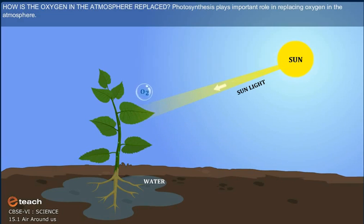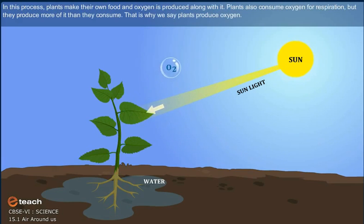Photosynthesis plays an important role in replacing oxygen in the atmosphere. In this process, plants make their own food and oxygen is produced along with it. Plants also consume oxygen for respiration, but they produce more of it than they consume. That is why we say plants produce oxygen.